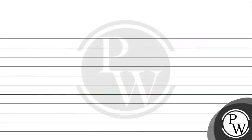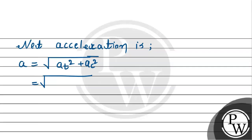Now we can calculate the net acceleration. Net acceleration is given by a equals square root of at squared plus ac squared. This equals square root of 1 squared plus 8 squared. This will be square root of 1 plus 64, which equals square root of 65.